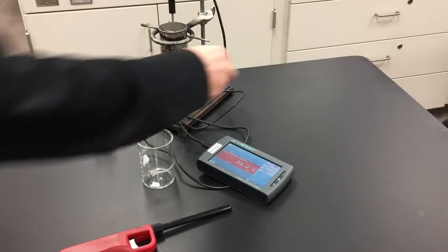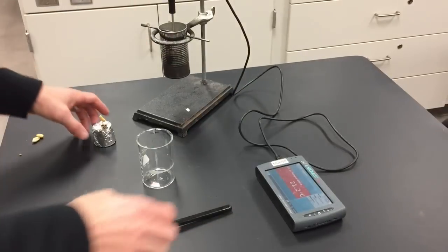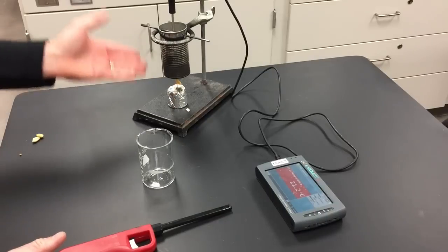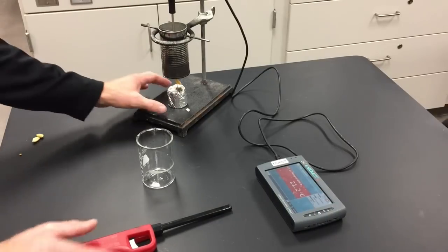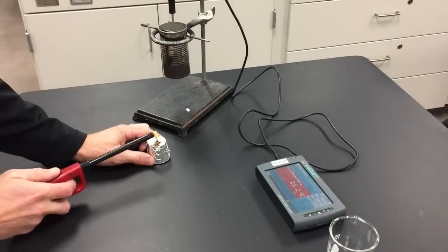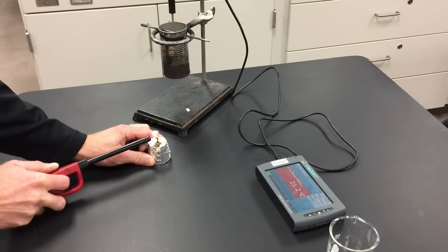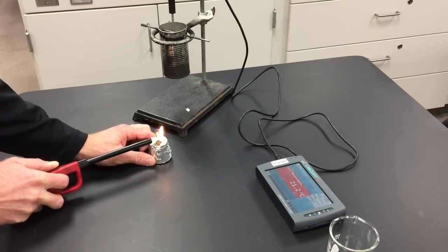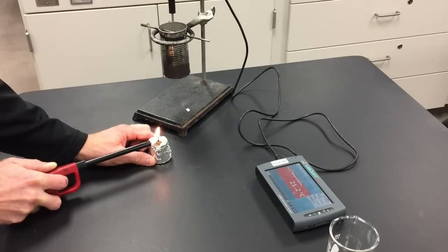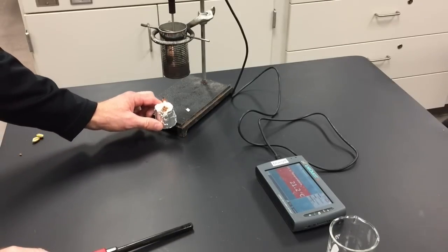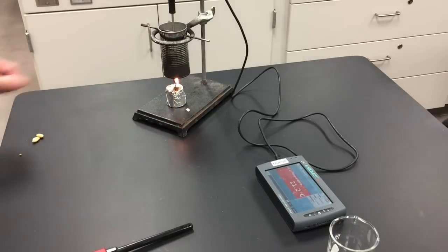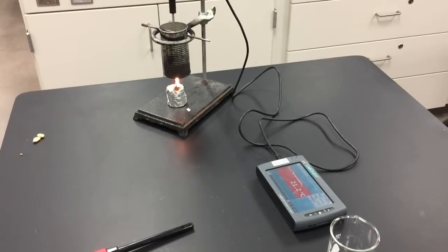Place the food item, make sure that it's under the can with enough space. Adjust it if you need to. This looks okay. Light the food item on fire, away from the water. Carefully transfer it underneath the can and allow it to burn completely. If it goes out, you can relight it if you need to.